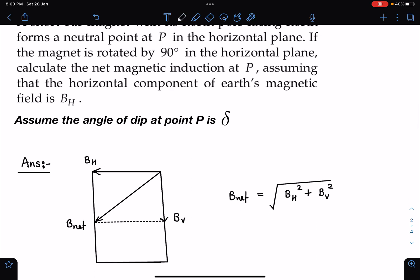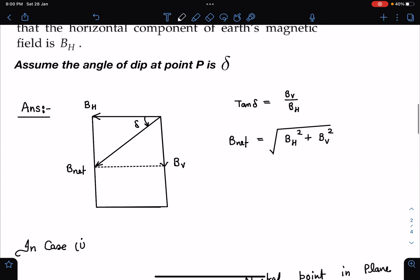So here we know already this delta actually is tan delta, this is the delta angle. So I can write tan delta as BV by BH. So basically B vertical is known to us in terms of BH.